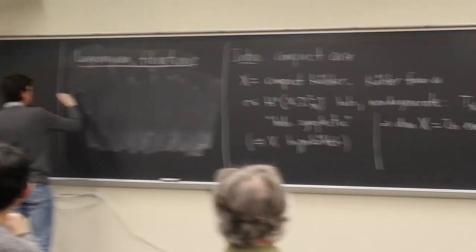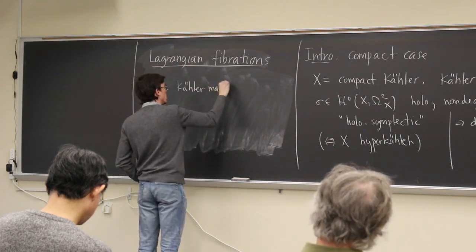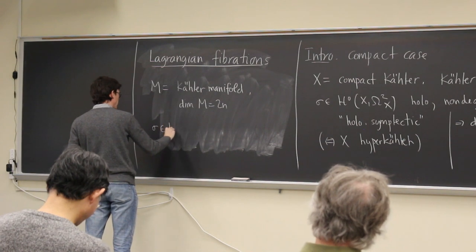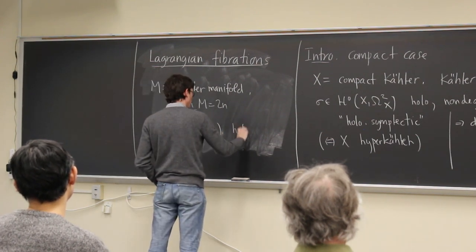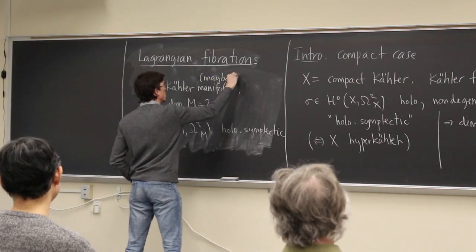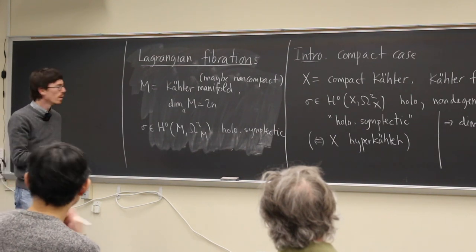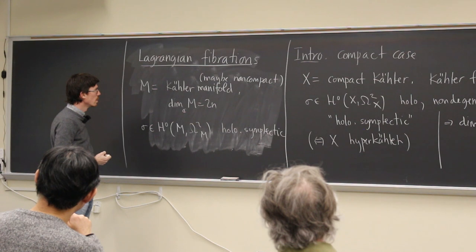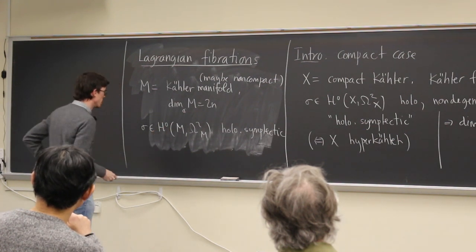Now let me introduce the actual main object. I will have M, which will now just be a Kähler manifold of complex dimension 2N, and again I want it to be holomorphic symplectic — so I'll take a holomorphic symplectic form. Now this time M may be non-compact. There's not going to be any metric around. I'm going to put some conditions on it — one condition is that I want the symplectic form to be closed, which gives a cohomology class.